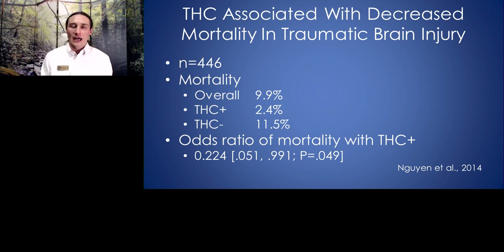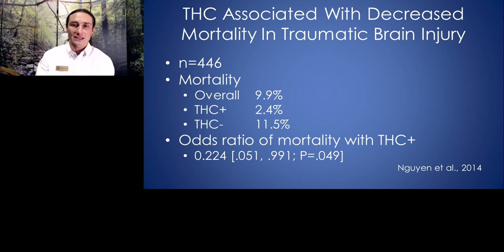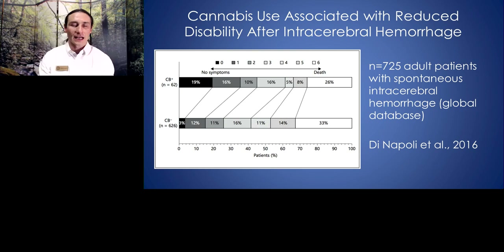Does this data translate to humans? We have some observational evidence — not controlled clinical trials, but suggestive evidence — that people who have brain injury with cannabis in their system are less likely to die. A 2014 study looked at 440 people with traumatic brain injury; their overall death rate was 9.9%. Among those with THC in their system, only 2.4% died, whereas 11.5% of the THC-negative group died. It appears cannabis is having a protective effect, or at least is associated with less death.